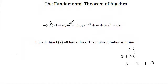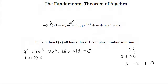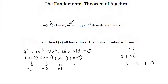For example, if we had the polynomial x to the fourth plus 3x cubed minus 7x squared minus 15x plus 18, set equal to 0 — skipping the factoring steps — this factors out to be (x+3)(x+3)(x-1)(x-2). So our zeros, or our solutions, would be negative 3, negative 3, positive 1, and positive 2.